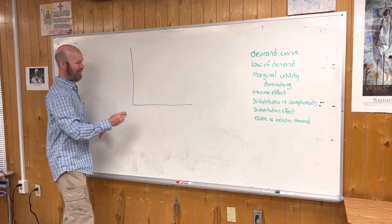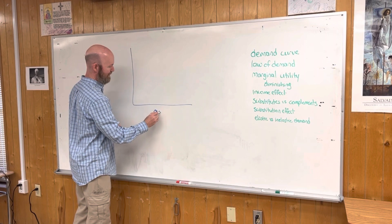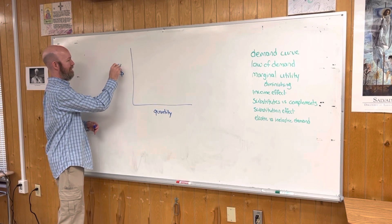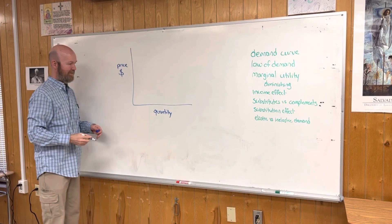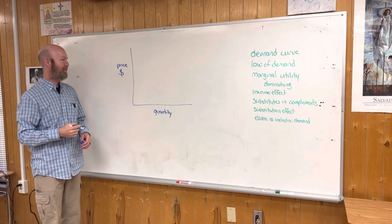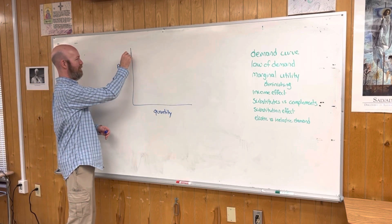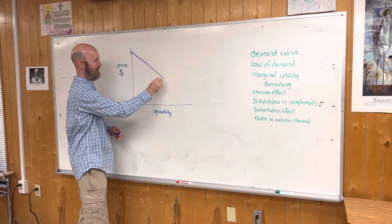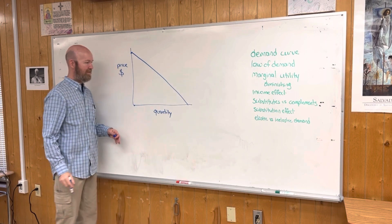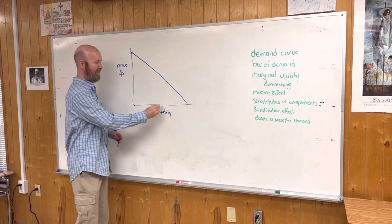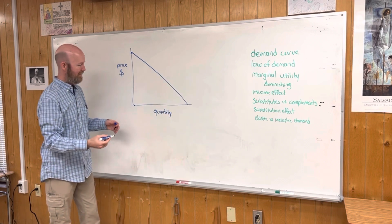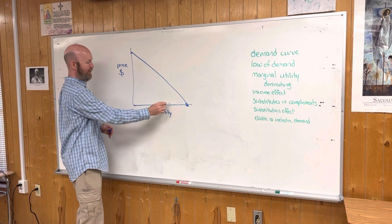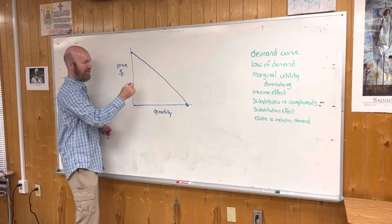On our graph, at the bottom we have quantity demanded, and up here we have price. According to the demand curve, when price is high, the quantity demanded is going to be low. As the price of an item, product, goods, or service goes down, quantity demanded is going to go up. Higher demand for a product if price is low, lower demand if price is high.